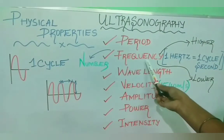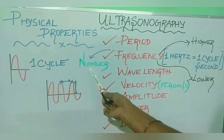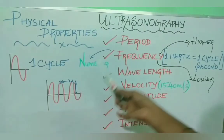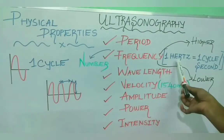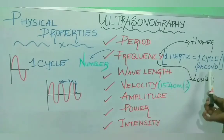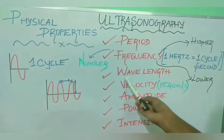Next is frequency. Frequency is the number of cycles per second. The unit of frequency is hertz. One hertz equals one cycle per second. Two hertz equals two cycles per second.